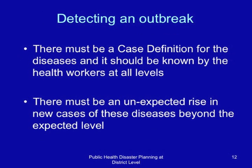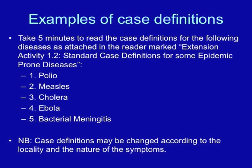Secondly, there must be an unexpected rise in new cases of the disease beyond the threshold. You should read the standard case definitions for some epidemic-prone diseases — for instance, what is the standard case definition for polio, measles, cholera, Ebola, and bacterial meningitis? Note that case definitions may be changed according to the locality and the nature of the symptoms presenting in a particular outbreak situation.